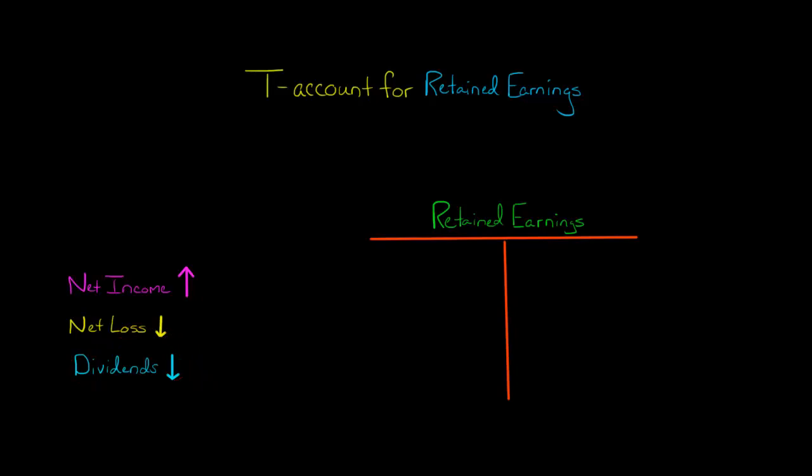For example, if we started with retained earnings of $40, and the company had net income of $60, we'd have net income of $60, we'd credit the retained earnings.